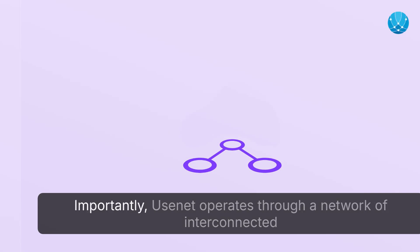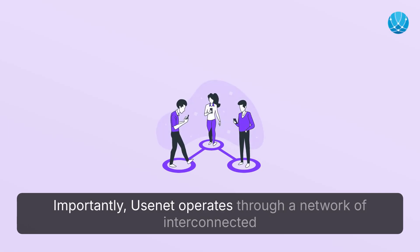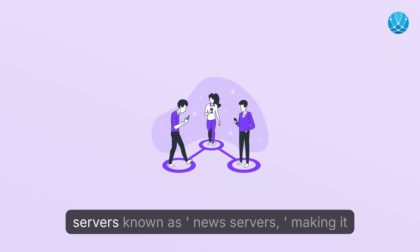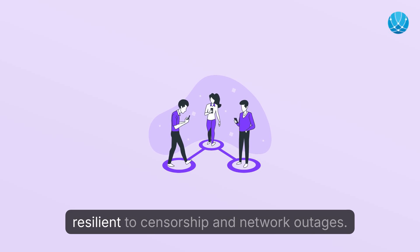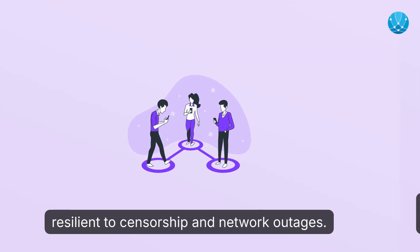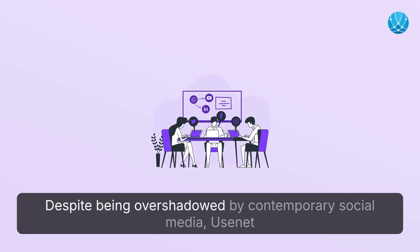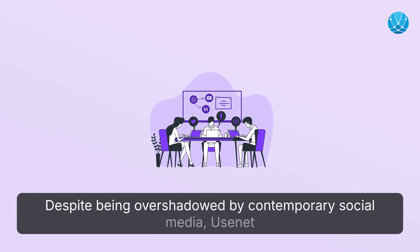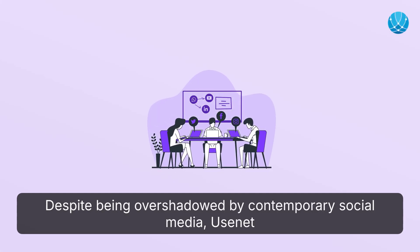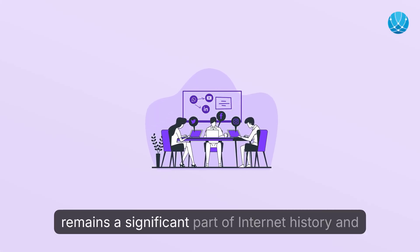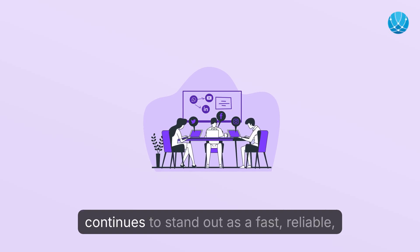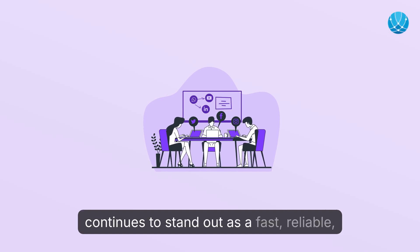Importantly, Usenet operates through a network of interconnected servers known as news servers, making it resilient to censorship and network outages. Despite being overshadowed by contemporary social media, Usenet remains a significant part of internet history.